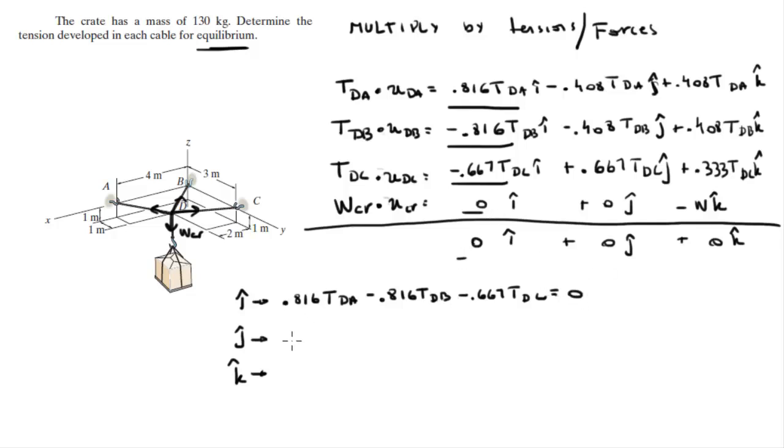Second equation is for the j: minus 0.408 TDA minus 0.408 TDB plus 0.667 TDC is equal to 0.